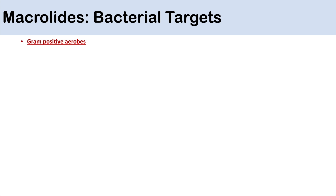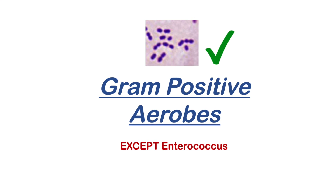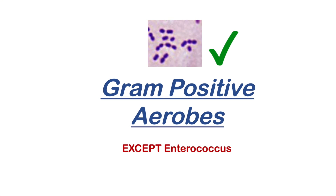What are some of the bacterial targets of macrolides? The macrolides are good at combating gram-positive aerobes like Streptococcus pneumoniae and methicillin-sensitive Staphylococcus aureus (MSSA). They're also good for treating Corynebacterium and diphtheria. In general, macrolides are good against gram-positive aerobes except enterococcus.